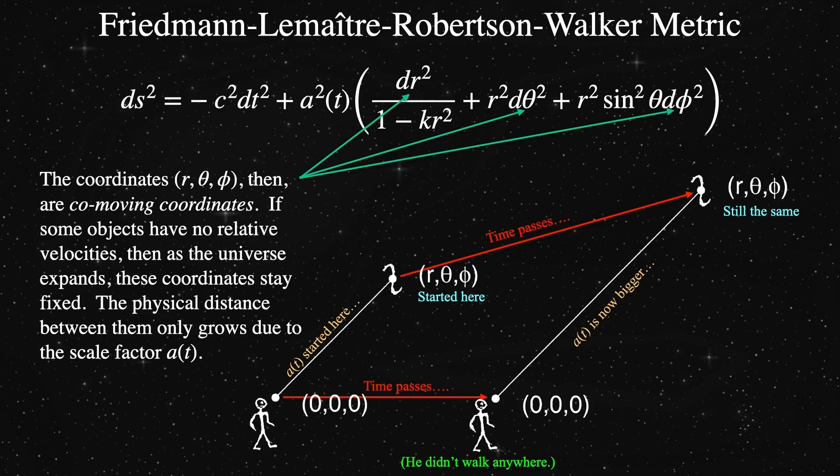That's the sense of co-moving coordinates. They are the tick marks on the rulers that permeate the universe. They don't have physical dimensions in of themselves, but the scale factor of the expansion bestows that physical length upon them.